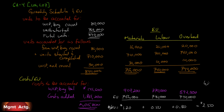Our whole cost per equivalent unit is $2.50. The question asked us to determine the cost per equivalent unit for June: materials is $1.20, labor is $0.50, overhead is $0.80, for a whole cost per equivalent unit of $2.50.